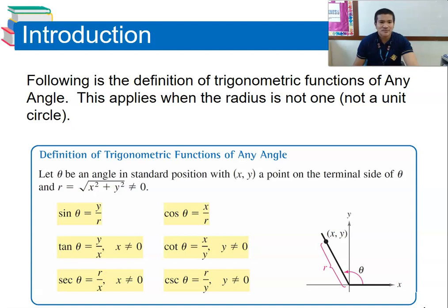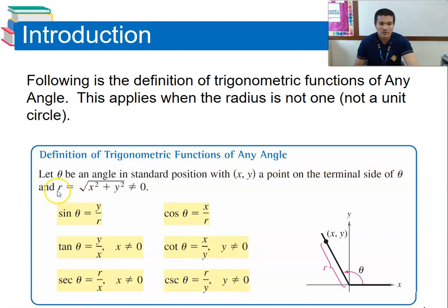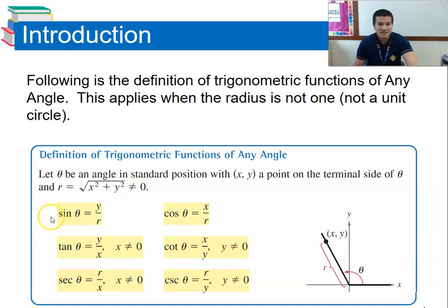First, we will define what is a trigonometric function of any angle. Let theta be an angle in standard position, with x and y being the coordinates of a point on the terminal side of theta. And r will be the radius or hypotenuse, which gives us r = √(x² + y²), where r is not equal to zero.